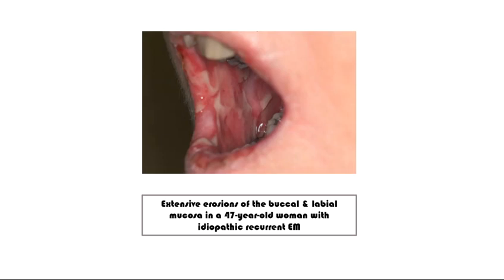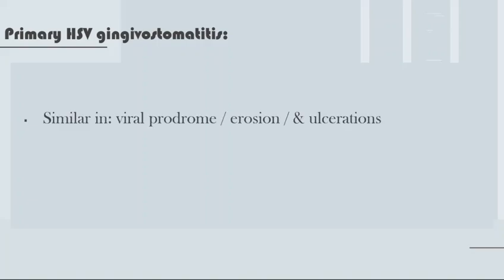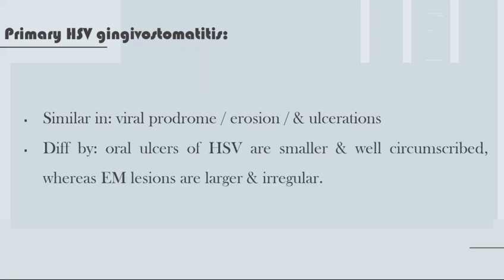Here we have the extensive erosion that we saw before — the erosion that is present intra-orally. It depends on primary herpes simplex virus gingivostomatitis. It is similar in viral prodromes, erosion, and ulceration. The oral ulcers of herpes simplex virus are smaller and well-circumscribed, whereas the erythema multiforme lesions are larger and irregular.